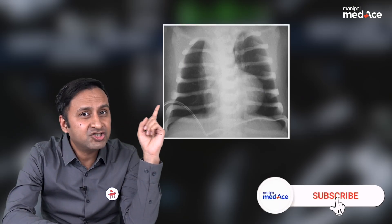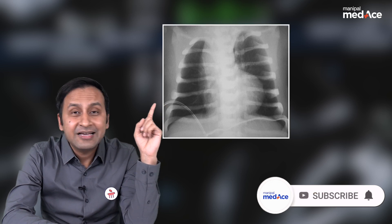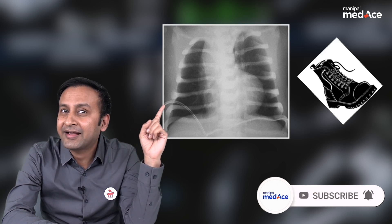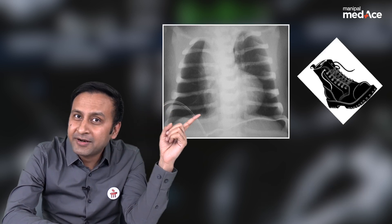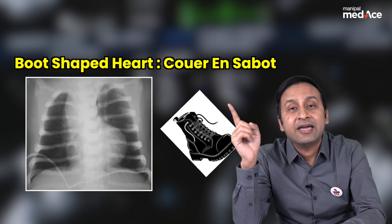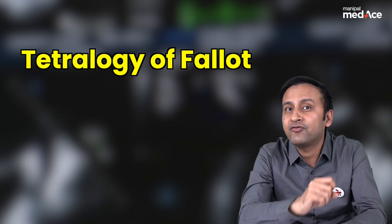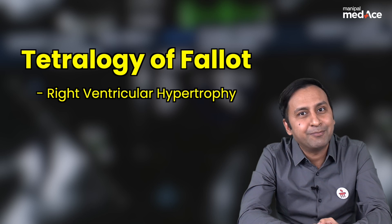What do you see? What is the shape of the heart reminding you of? This type of heart is typically looking like a boot. So this boot-shaped heart, or coeur en sabot, is typically seen in tetralogy of Fallot and occurs because of right ventricular hypertrophy.